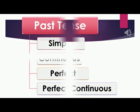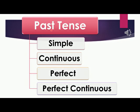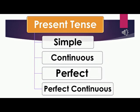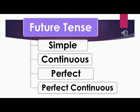We can take it in this way. Look at this diagram. Past tense has four branches: simple, continuous, perfect and perfect continuous. Present tense also has the same number of branches with the same names: simple, continuous, perfect and perfect continuous. Now, look at the diagram of future tense — same number, same branches, aren't they?